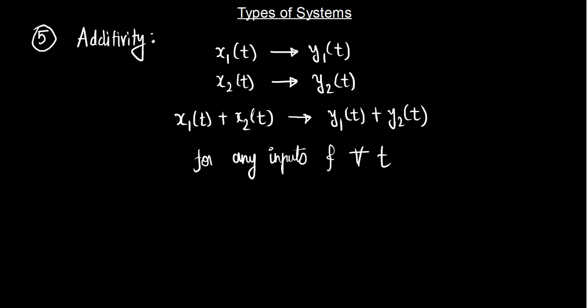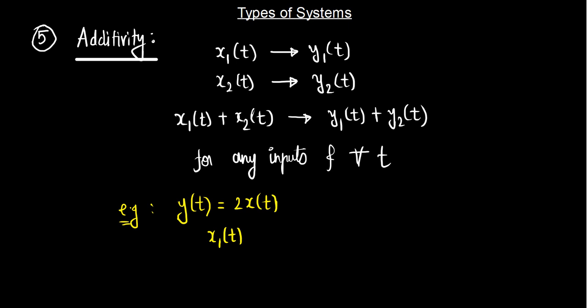Let's understand this with an example of additivity. Say y(t) equals 2 times x(t). We perform two experiments: first we take input x1(t), which results in output 2·x1(t). Then we take x2(t) as another input and get output 2·x2(t).